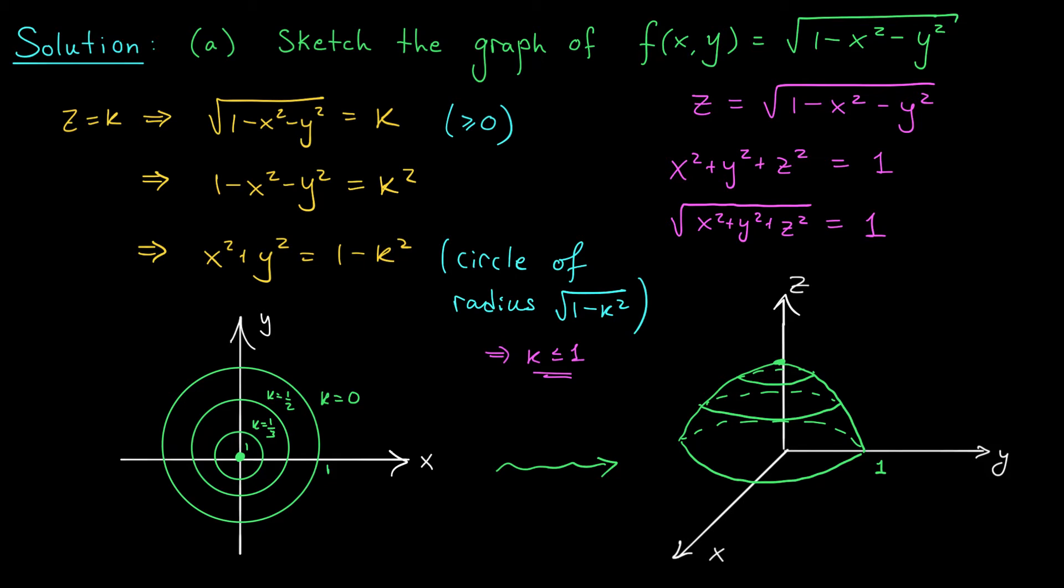If you square root both sides again you get the square root of x squared plus y squared plus z squared is equal to 1. And this expression on the left hand side you may recognize as our distance formula. This is the distance from the point xyz to the origin in R3. So what this equation is saying is we're taking all points xyz that have distance exactly 1 to the origin. That gives us a sphere of radius 1. But of course since z is equal to the square root of some real number z must be greater than or equal to 0. That's why we're just getting the upper half of our sphere.